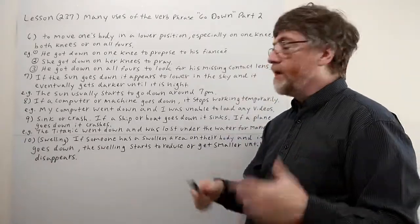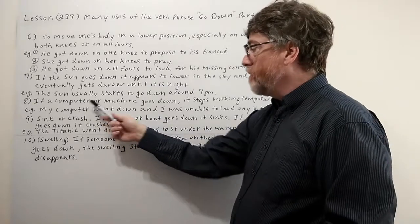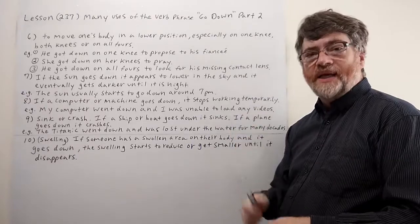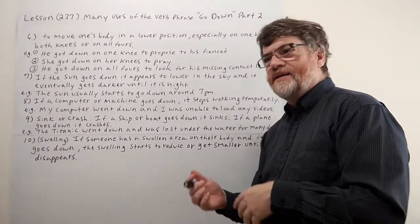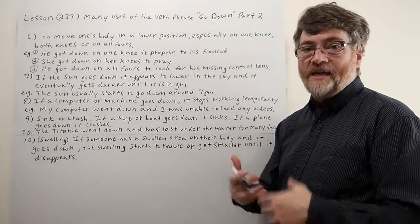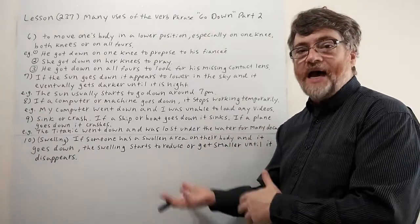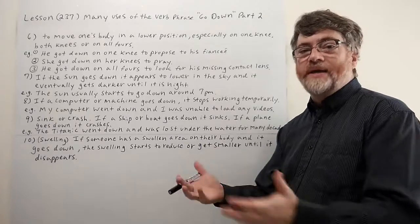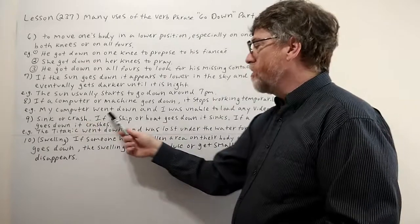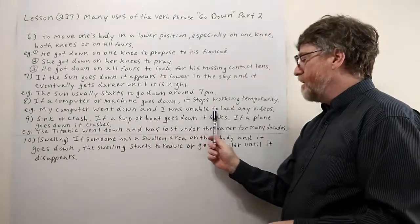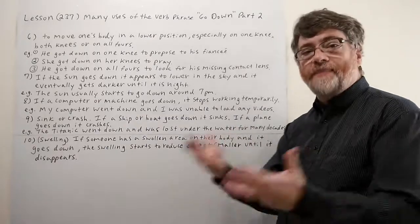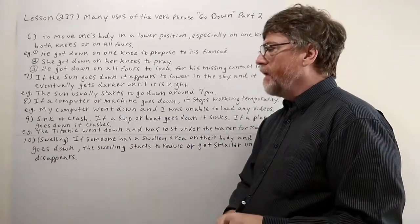Let's look at number eight. If a computer or machine goes down, it stops working temporarily. It has the implication that you probably will fix it and it will be up again eventually, but it went down. It's down for now. It's not working at this time. Here's the example: my computer went down and I was unable to upload any videos.